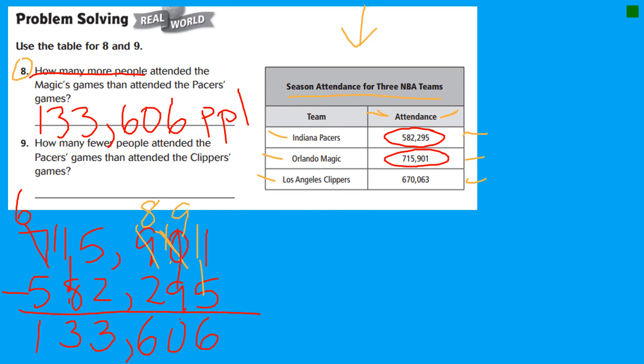Number nine. How many fewer people attended the Pacers game than attended the Clippers game? So this one asks how many more. This one asks how many fewer. So boys and girls, they're still asking kind of the same question. What's the difference between the number of people who came to those games? They just said it differently.